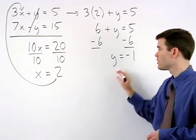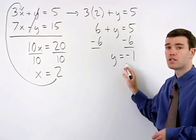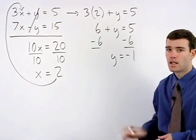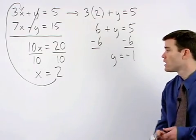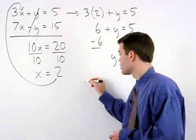So x equals 2 and y equals negative 1. Put your answer in the form of the ordered pair (2, negative 1).